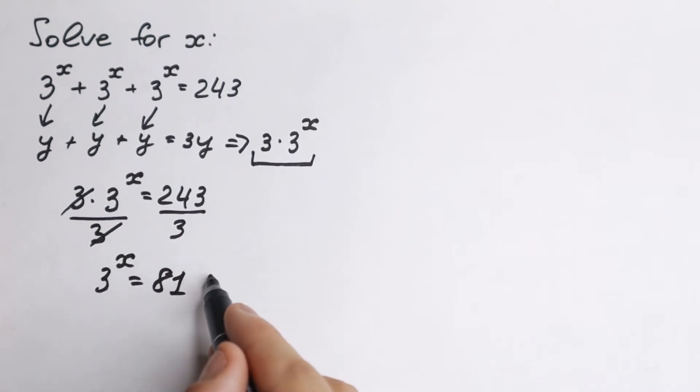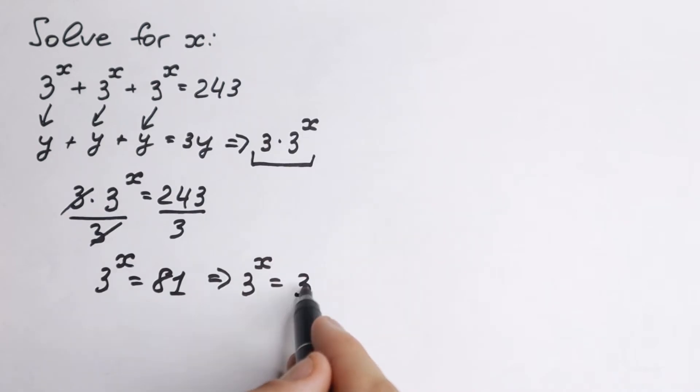And it's not hard to see that 3^x equals 81 can be written as 3^x equals 3^4 because 27 times 3 equals 81. This is our answer. So x equals 4.